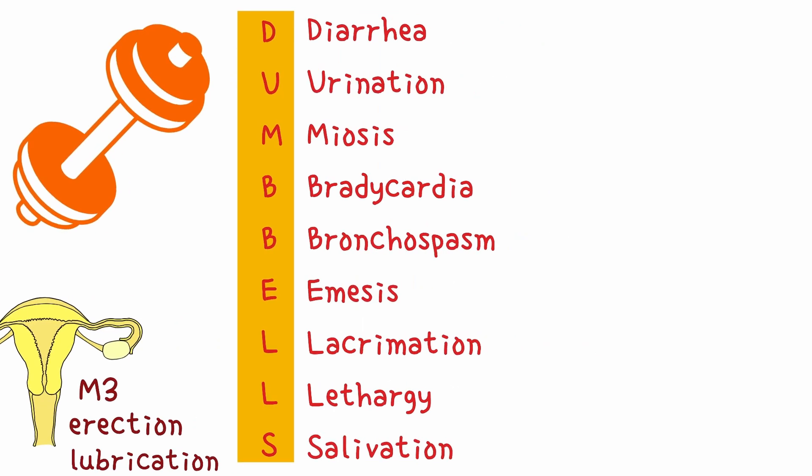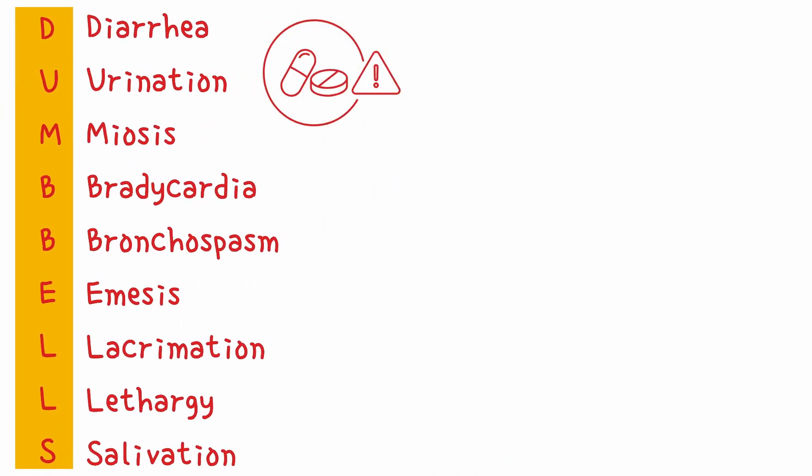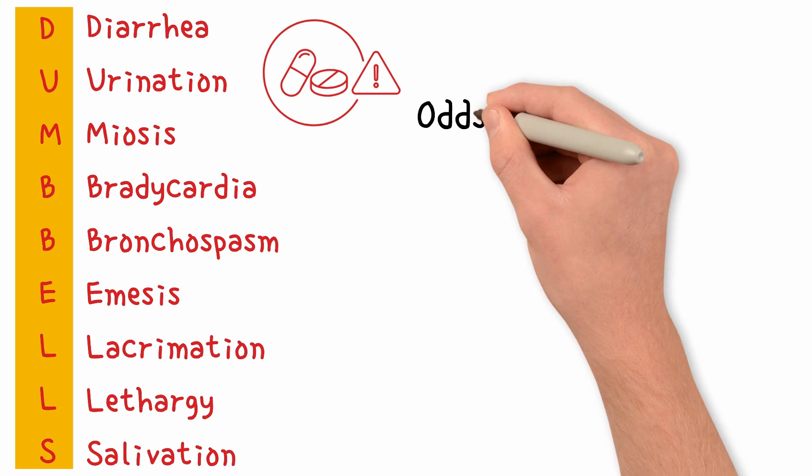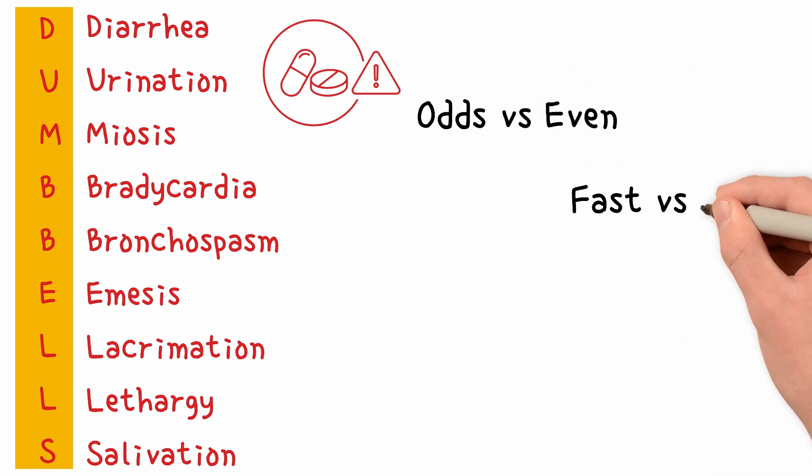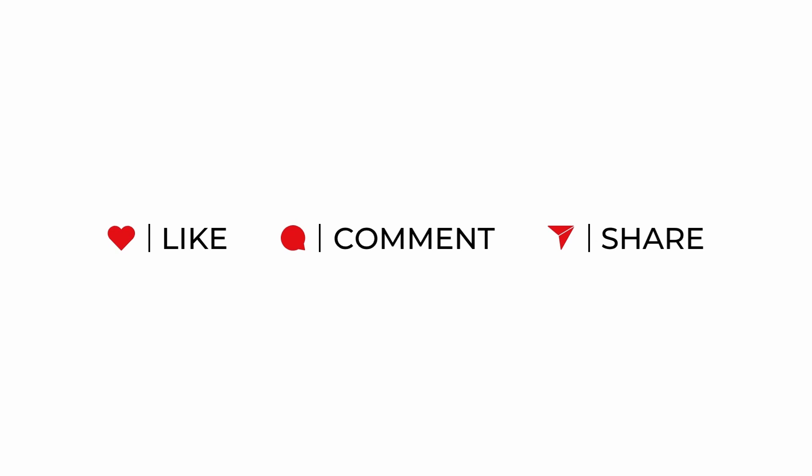Note that these are actually signs of cholinergic toxicity, which is just an exaggeration of normal parasympathetic effects. Understanding this molecular logic – odds versus evens, fast versus slow, the receptor pathways, and the DUMBBELLS – is the key to predicting the effects of every cholinergic drug we will discuss in the next video. Thanks for watching Logical Pharmacology!